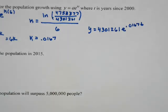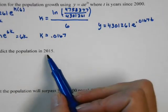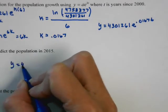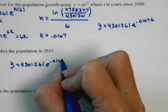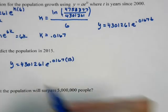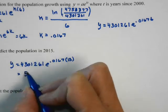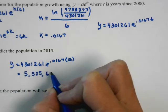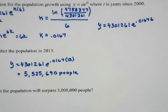The general equation is y = 4,301,261 times e to the 0.0167t. For part b, plug in t = 15 to predict the 2015 population. Type it into the calculator and round to a whole person — we get approximately 5,525,690.